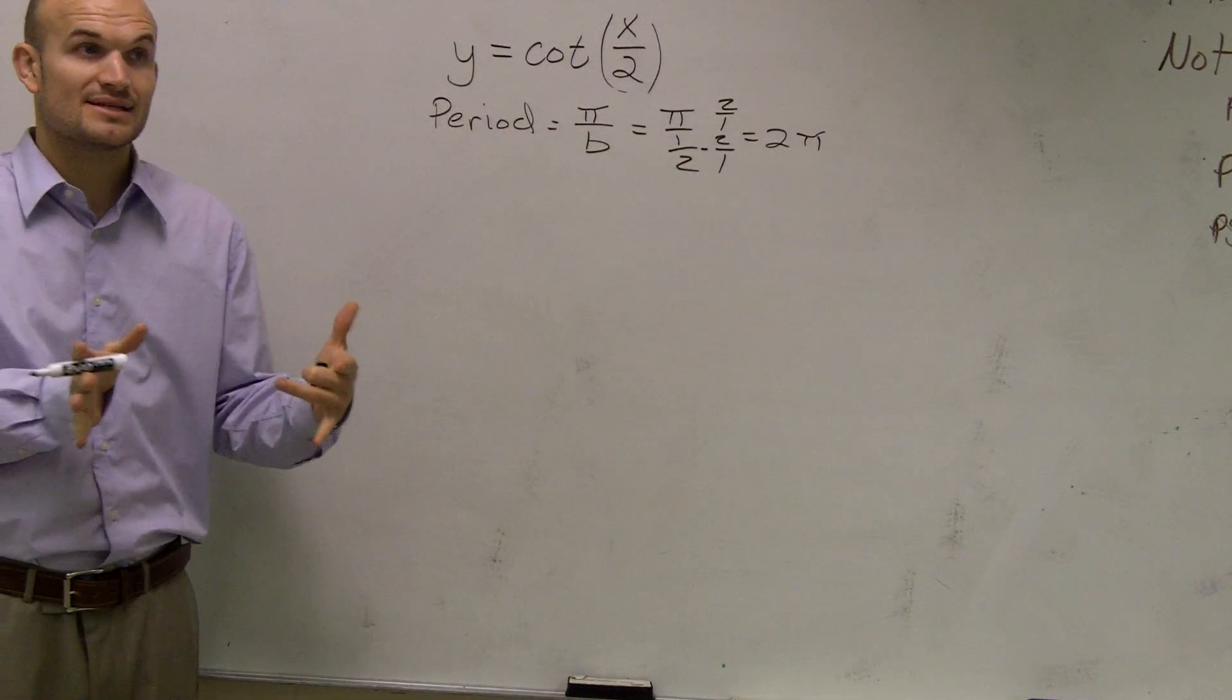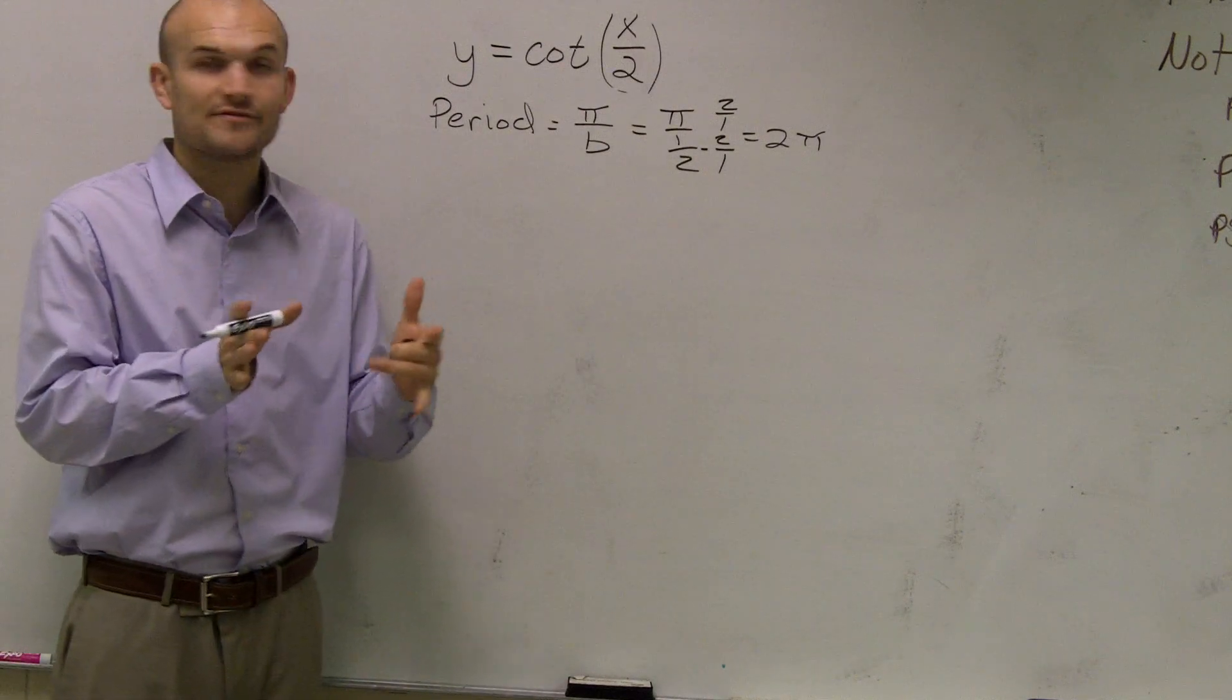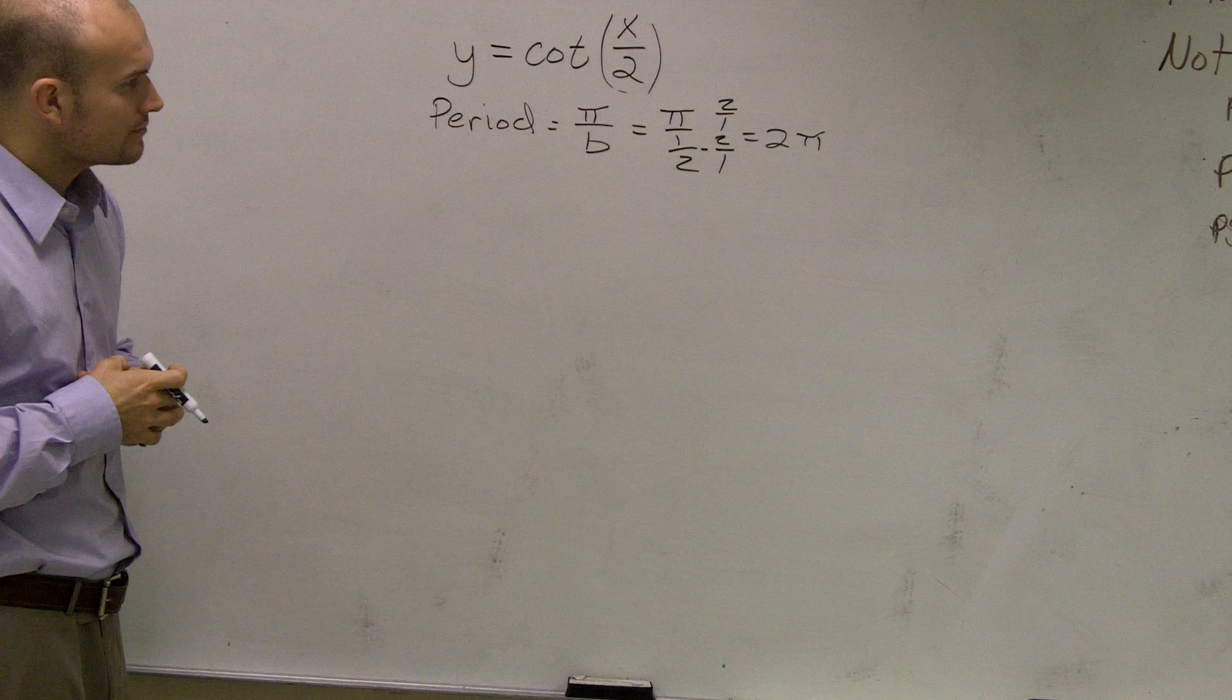And therefore, I get 2π. So what that means is that now it's going to take 2π for my graph to complete one cycle.